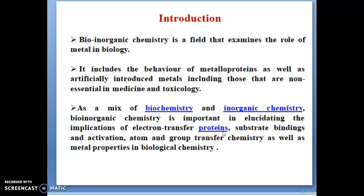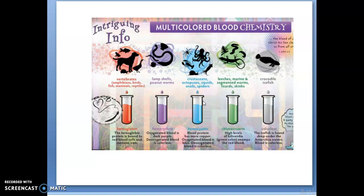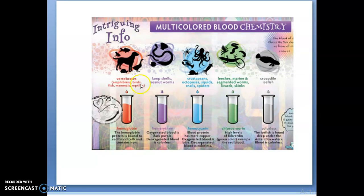This includes substance binding and activation, atom or group transfer in chemistry, as well as metal properties in biological chemistry. You can see the picture showing how multi-colored blood chemistry works. You can see hemoglobin in red color, hemerythrin in blue color, and hemocyanin which is colorless. These studies are examined by bio-inorganic chemistry. I will explain these three in detail in the next upcoming slides.